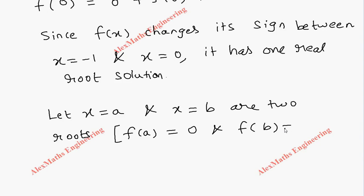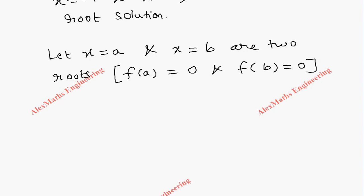And according to Rolle's theorem, let's take a small rough graph. Suppose there is a graph something like this, and one value is x = a (a, 0) here, and another value (b, 0) x = b here. So when these two roots exist, according to Rolle's theorem there exists a value c between a and b such that f'(c) = 0.